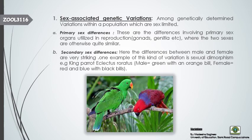The second type of sex-associated genetic variation is secondary sex differences. Unlike primary sex differences, which are only differences in reproductive organs, in secondary sex differences the differences are quite visibly apparent between male and female organisms. For example, the king parrot, Eclectus roratus — on the left is a green-colored male parrot with an orange bill, and on the right is a red and blue female parrot with a black bill. These two parrots belong to the same species but are variants because of their different sexes.